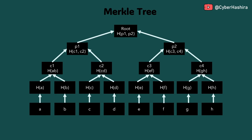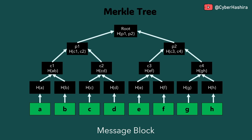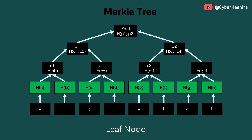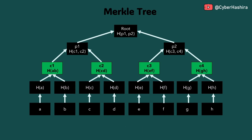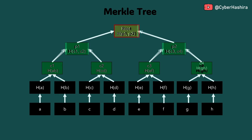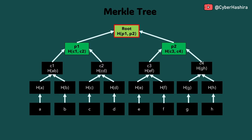Imagine there are eight blocks of messages from letter A to letter H, and each of these blocks is hashed using a hash function. The hash values produced by each message block become a leaf node. The letter H represents the hash function and the letter inside the bracket represents the message block it has hashed. Each leaf node is then paired and hashed again to form another node in the tree. The two hashed values serve as child nodes, and the new node created by hashing these two values is called a parent node. This process of hashing pairs of leaf nodes continues until only one node remains, which is known as the root node.